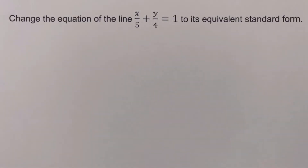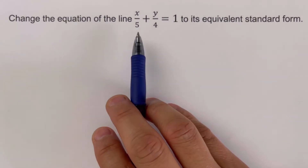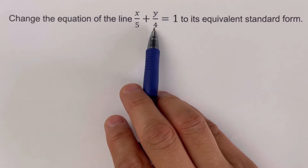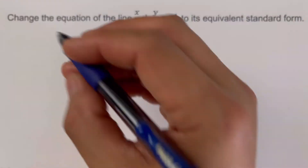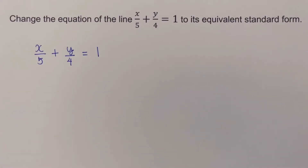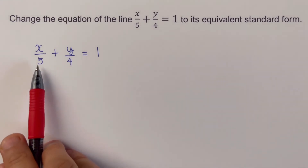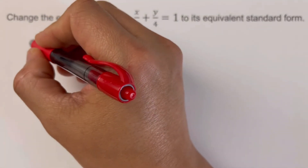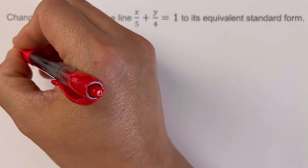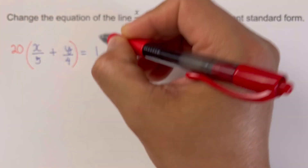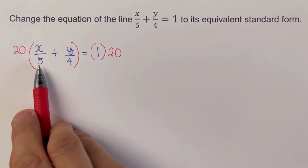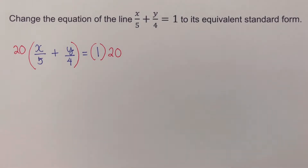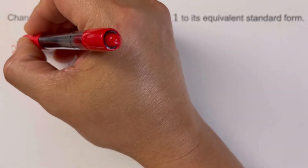Going back to the example, we are given the two-intercepts form of a line where a is five and b is four, and we need to change it to its equivalent standard form. We are going to multiply the a and b values: five times four is 20, and that is the number we multiply to both sides of the equation. We then distribute this 20 to each of the terms inside the parentheses.